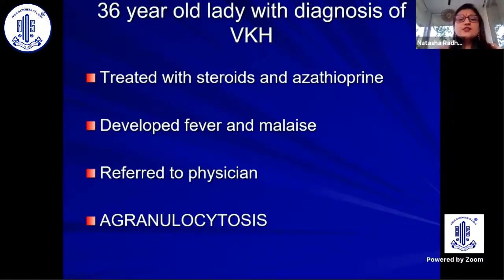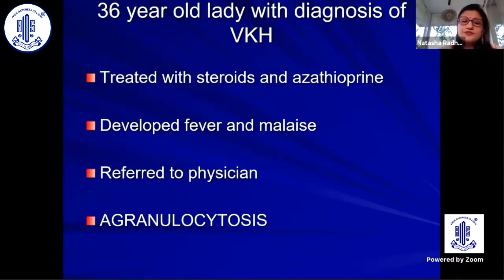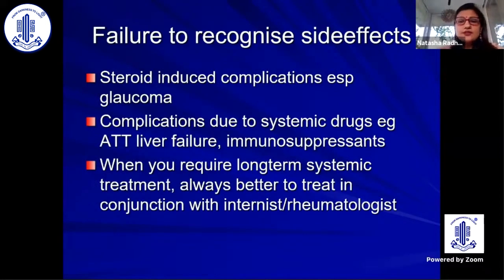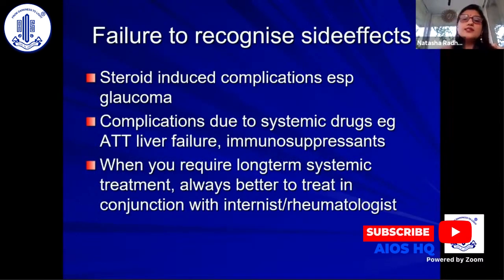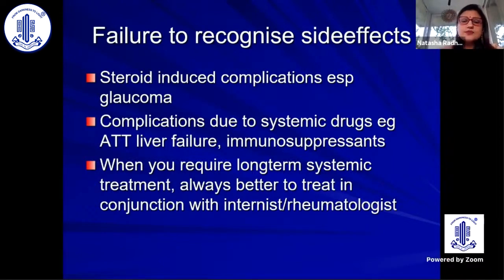Looking at what can go wrong when you start managing the patient: a 36-year-old lady with a diagnosis of VKH was treated with steroids and azathioprine from elsewhere, developed fever and malaise, was referred to the physician, and developed agranulocytosis. You cannot give a treatment and then not recognize the side effects. Steroid-induced complications, complications due to systemic drugs — ATT, immunosuppression — must be monitored. Whenever long-term systemic treatment is required, it is always better to treat in conjunction with an internist or rheumatologist.